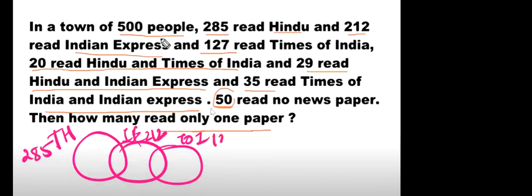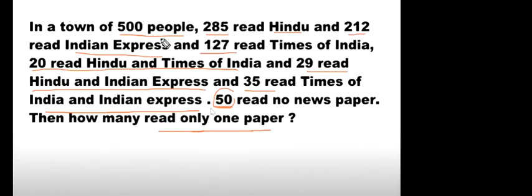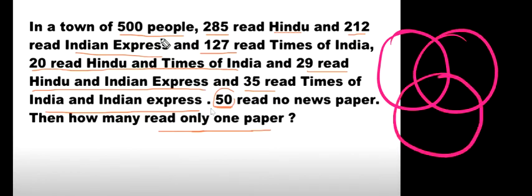Times of India is 127. Now let's label the sets: Hindu is A, Indian Express is B, and Times of India is C.